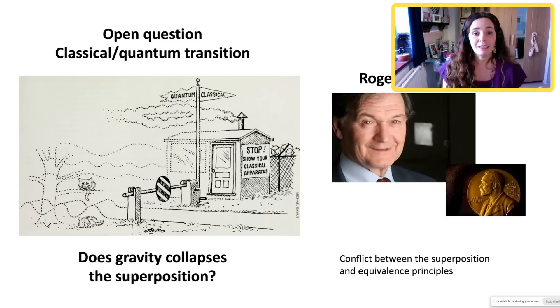So what kind of masses would you need in order to see if the predictions of Roger are correct or not? Do you mind briefly outlining why is it that the superposition contradicts the equivalence principle or the strong equivalence principle?